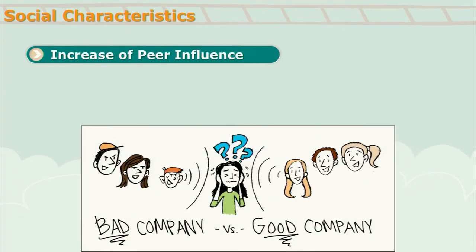Increase of peer influence. As we have already talked about group loyalty, peer influence is very high at this stage. They get influenced by their peers, they listen to their peers, and they follow them. Sometimes under peer pressure, they try to do everything their peer wants them to do because they feel pressure to adhere to the norms of the group, fearing they will be left out if they do not comply.